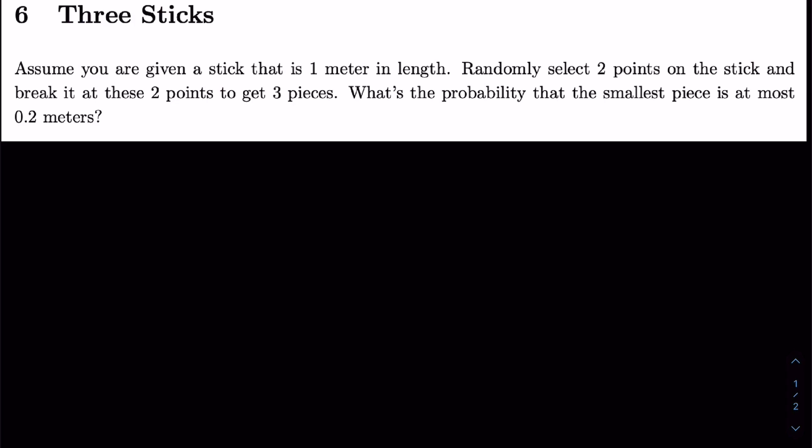In this problem we're given a stick that is one meter in length. We randomly select two points on the stick, break it at these two points, and get three resultant pieces. The question then asks for the probability that the smallest piece is at most 0.2 meters. This problem, I will admit, is slightly more challenging than the others we've posted so far because it requires a few key insights and observations.